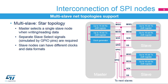When the SPI network includes more than one slave, a star topology is commonly used. The master communicates with one slave at a time, since you can only have one slave transmit data back to the master through the common MISO pin. In this topology, a separated slave select signal from the master has to be provided to each slave node. Thanks to separate slave select signals, SPI data and clock format can be adapted for each slave if the multiple slave nodes do not have a common configuration.